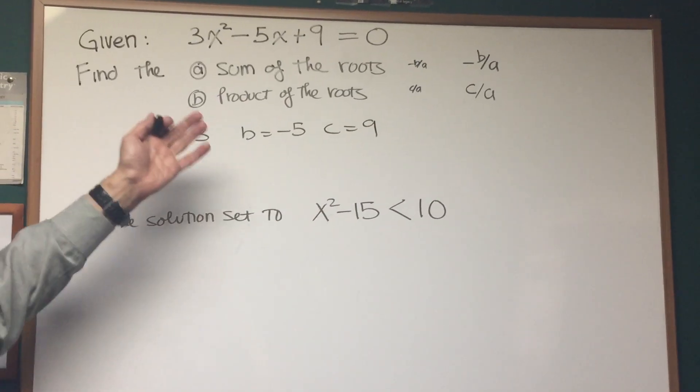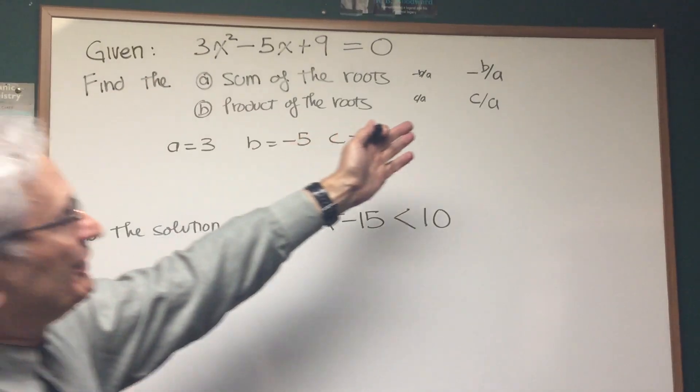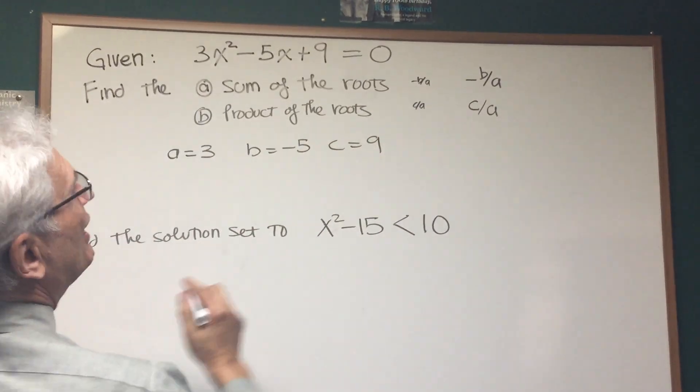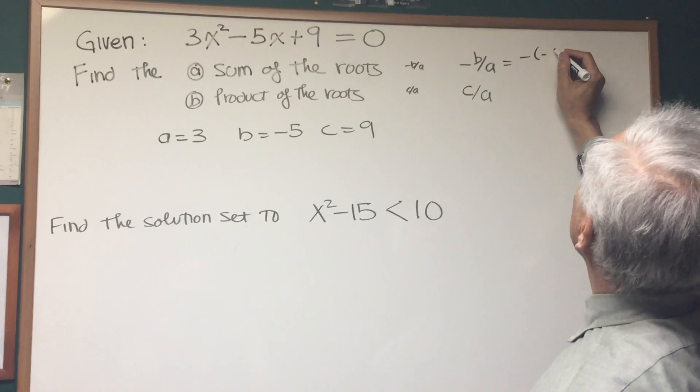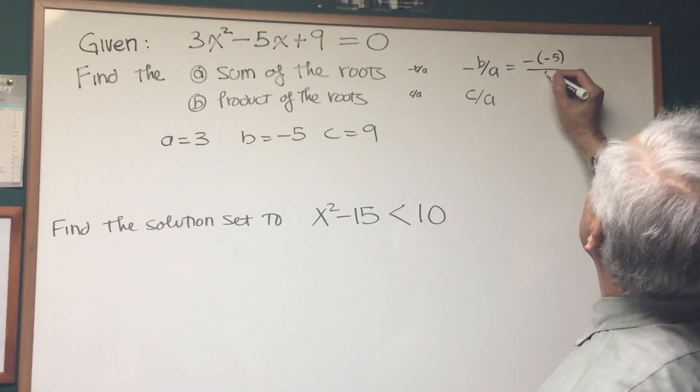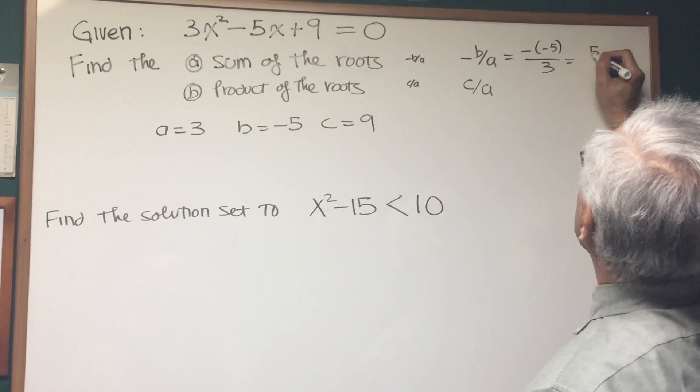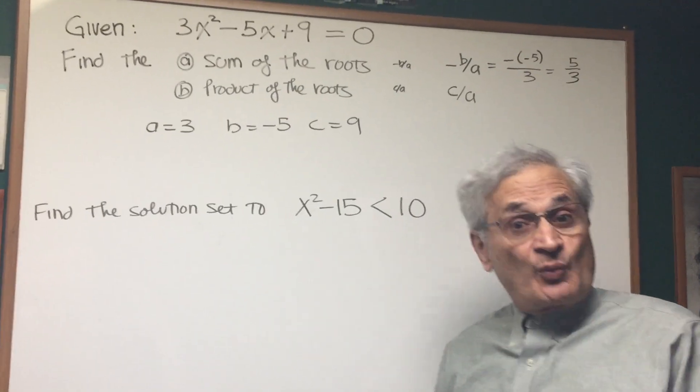All right, so we have the formula. The sum of the roots is represented by -b/a, so that's going to be equal to -(-5)/3, so the answer is 5/3. Simple as that.